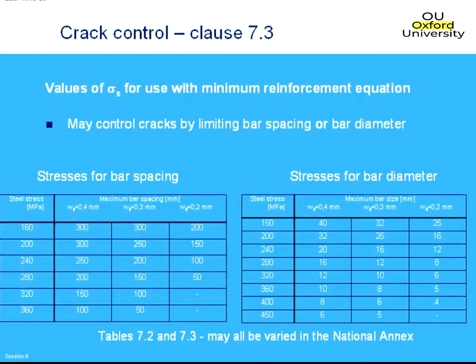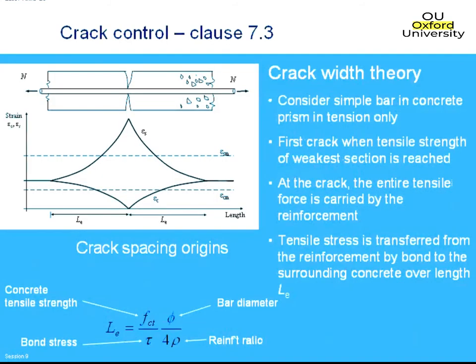You then use two tables from the Eurocode to work out the amount of reinforcement needed within the section. These tables will be covered in more detail later in the presentation when discussing crack width check calculations, but for now they are used for determining the minimum spacing of bars within the section.